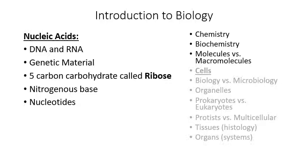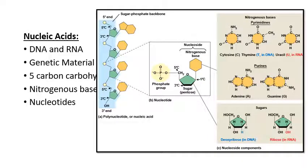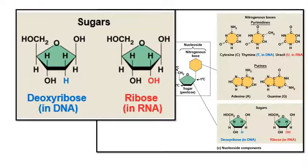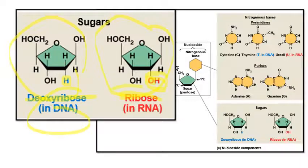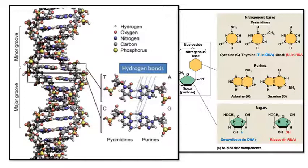Nucleic acids — DNA and RNA — are found in the center of cells and contain genetic information. This is deoxyribose and this is ribose — the only difference between these two molecules is that an oxygen is missing in deoxyribose. That's what DNA is made of versus RNA. DNA is a double helix that contains all the genetic information used to build the human body or any other animal body.